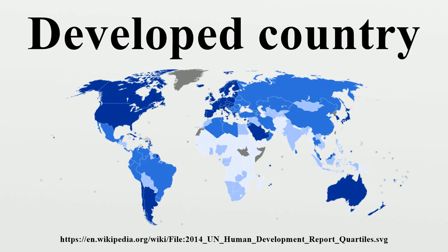Legatum publishes an annual ranking of world countries measuring economy, entrepreneurship and opportunity, governance, education, health, safety and security, personal freedom and social capital in 142 countries. The top 30 countries are: Norway, Switzerland, Denmark, New Zealand, Sweden, Canada, Australia, Netherlands, Finland, Ireland, United States, Iceland, Luxembourg, Germany, United Kingdom, Austria, Singapore, Belgium, Japan, Hong Kong, Taiwan, France, Malta, Spain, Slovenia, Czech Republic, Portugal, South Korea, Poland, United Arab Emirates.